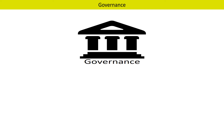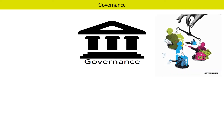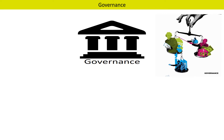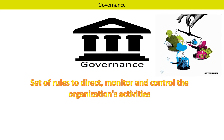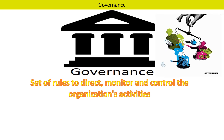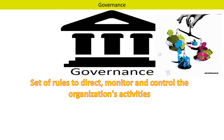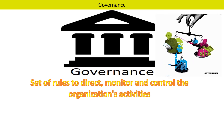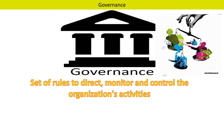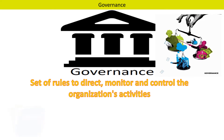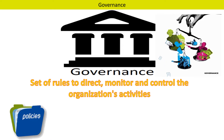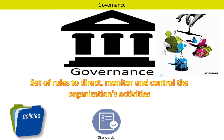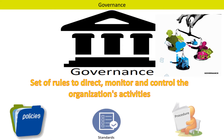Let us now discuss about governance. Governance is the system by which an organization is controlled and operated. In simple words, governance can be defined as a set of rules to direct, monitor and control the organization's activity. Governance can be implemented by way of policies, standards and procedures.